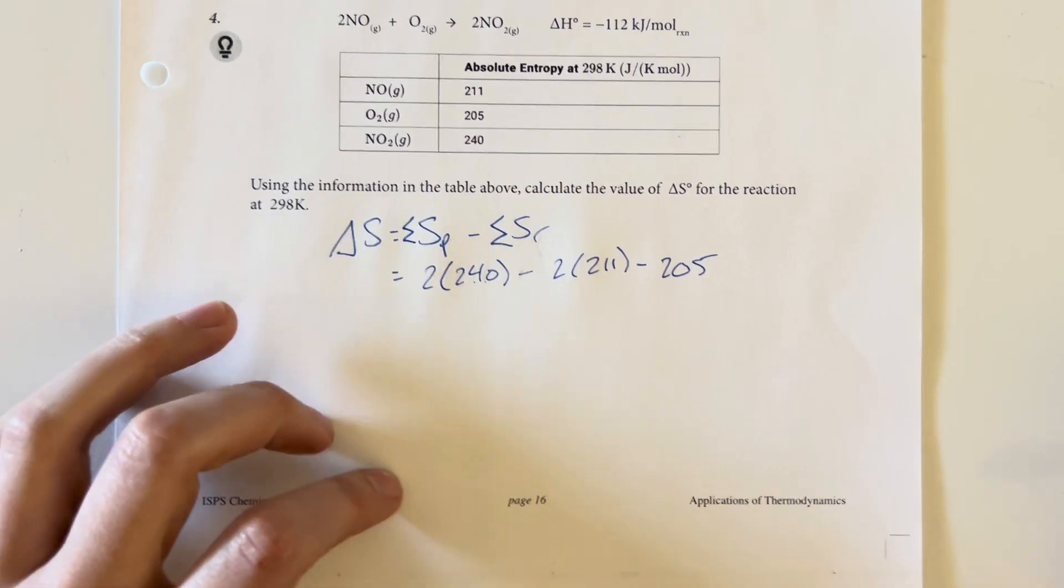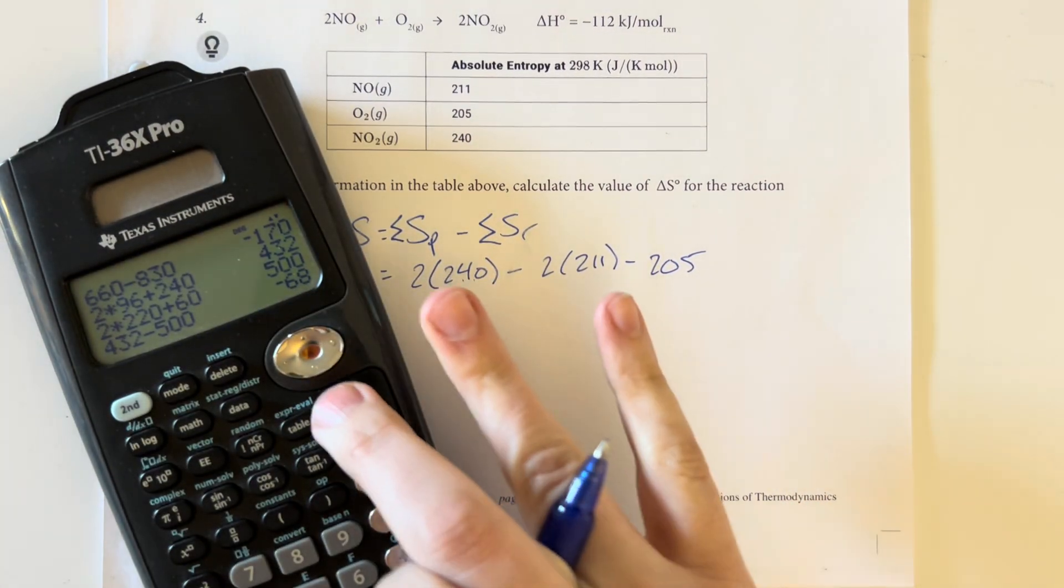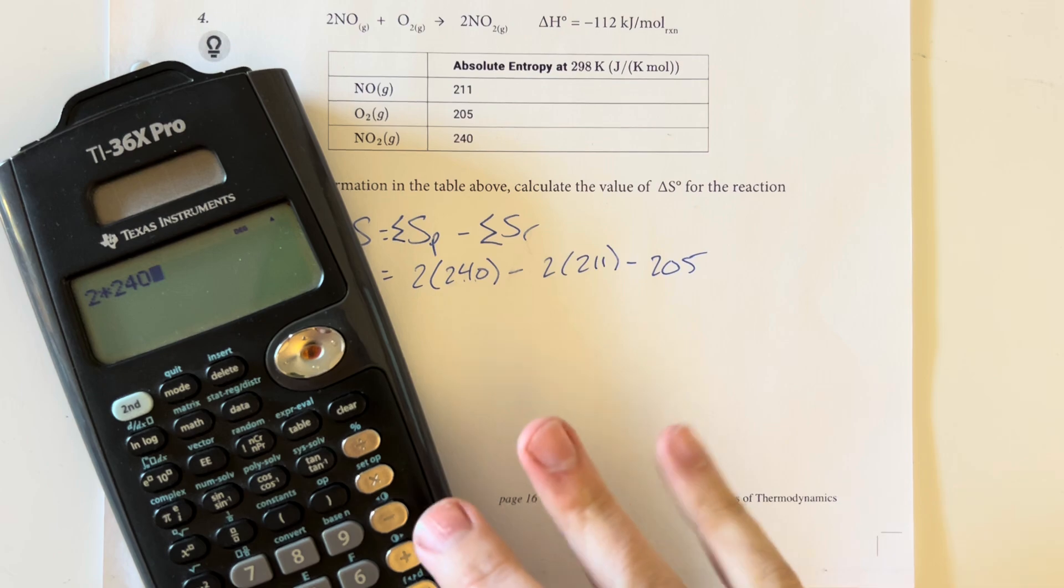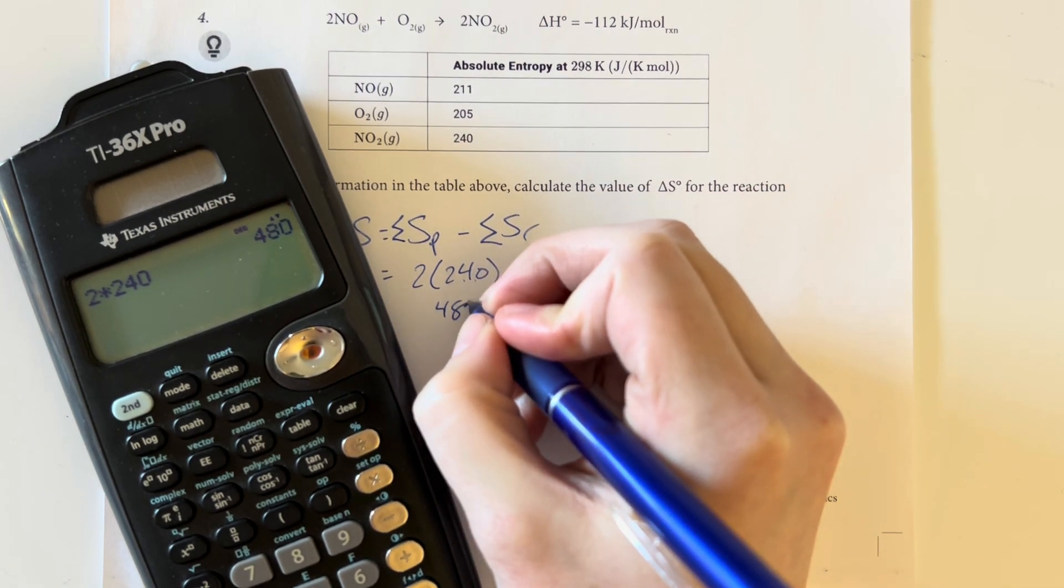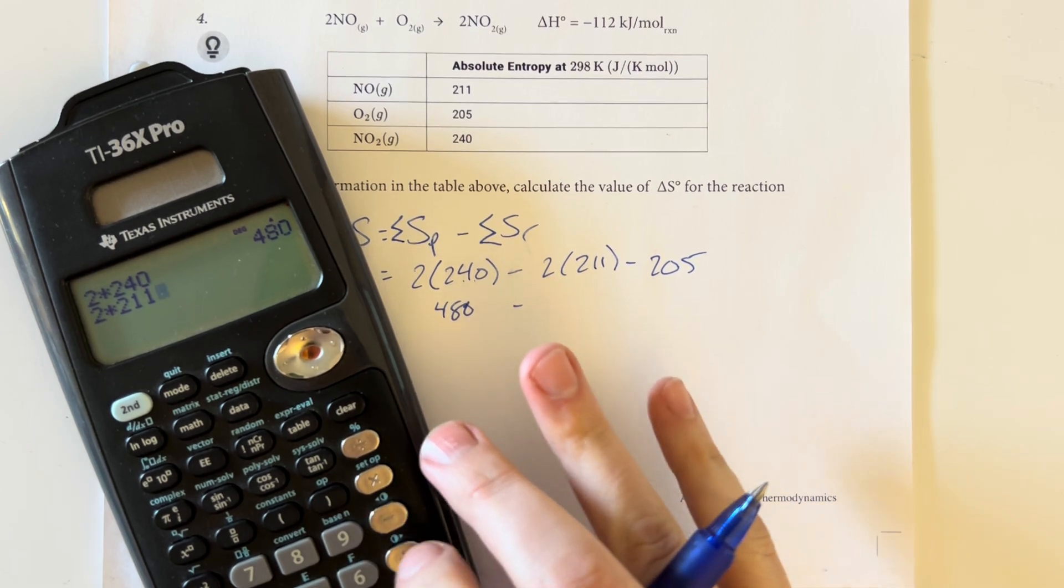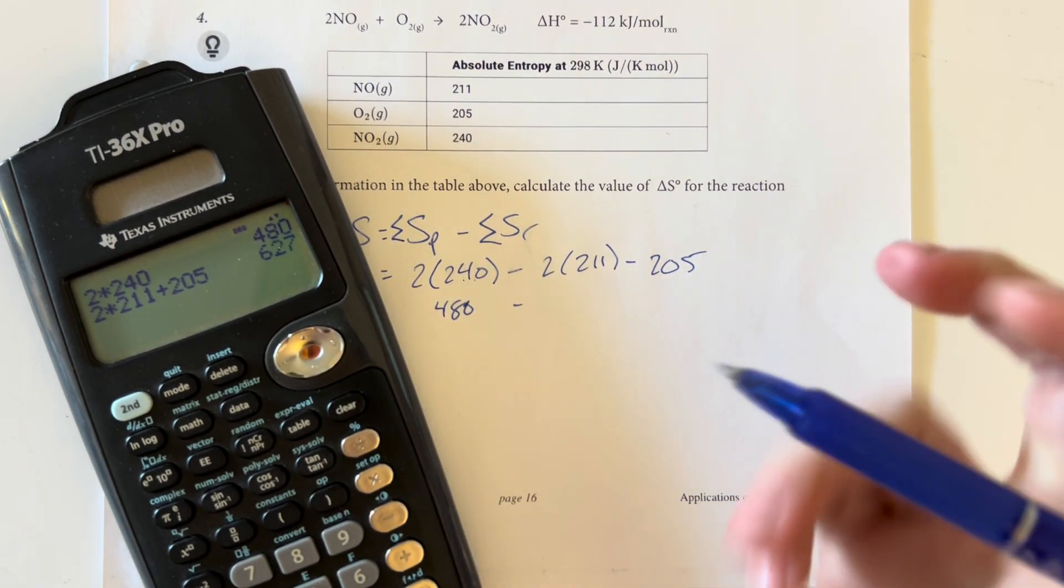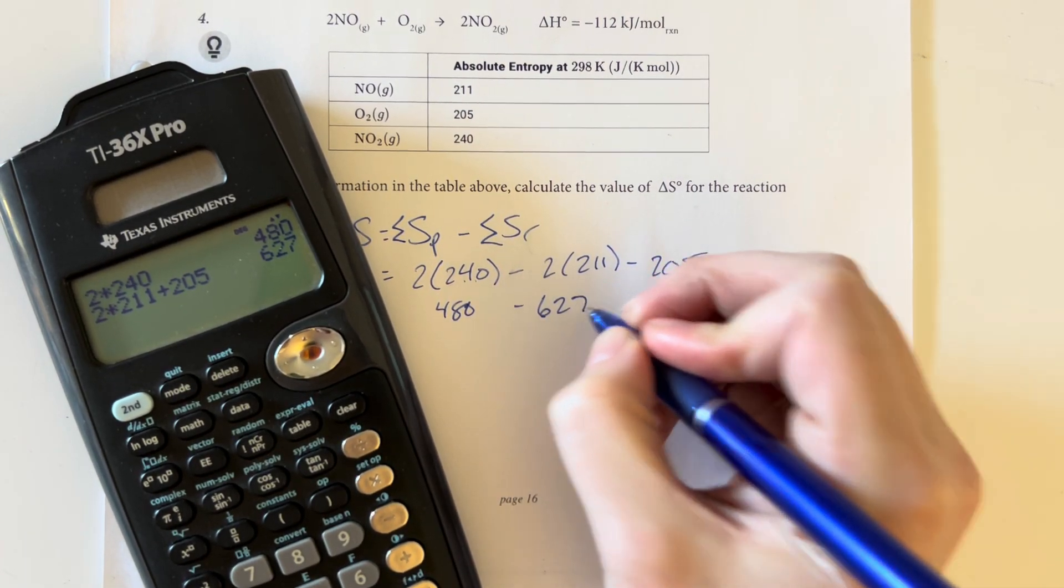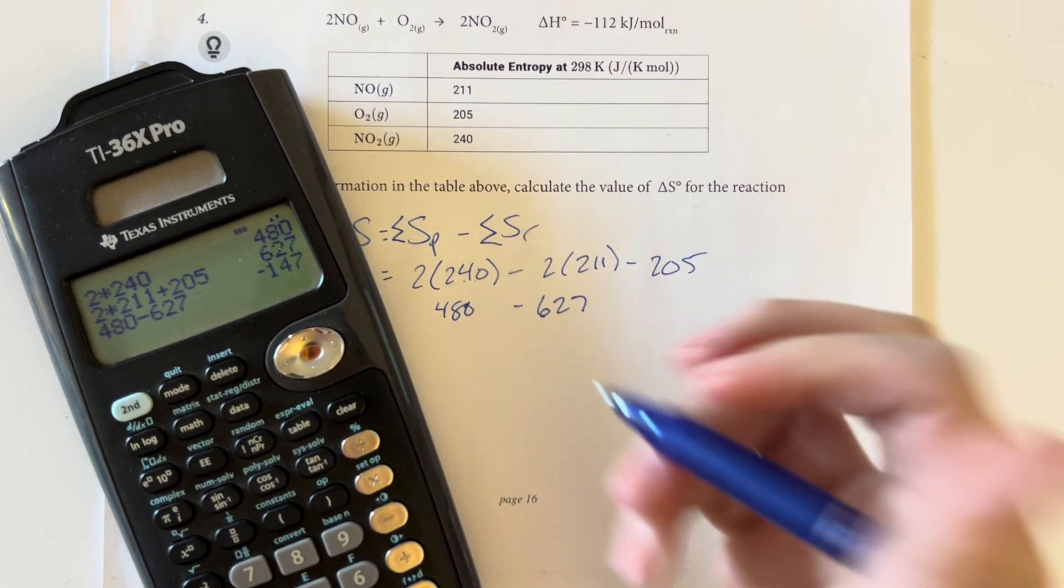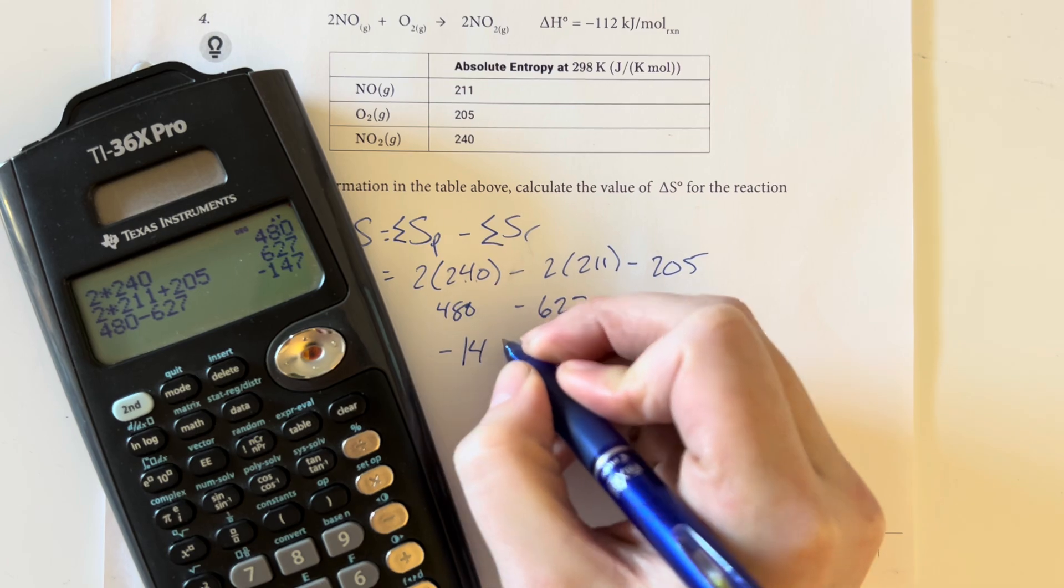And then minus for the oxygen, which is 205. So 2 times 240 gives me 480. Minus 2 times 211 plus 205 gives me 627. 480 minus 627 gives me negative 147.